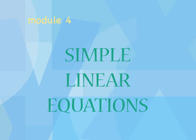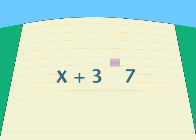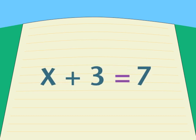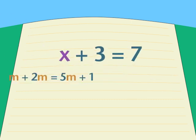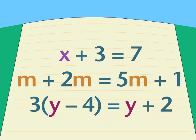An equation is always a mathematical statement that something equals something else. That's why an equation always has an equal sign. An equation can be very simple, or it can be very complicated. The ones we'll look at today won't be quite as hard — they'll look like these, with only a single letter and not even a square or a cube to worry about.